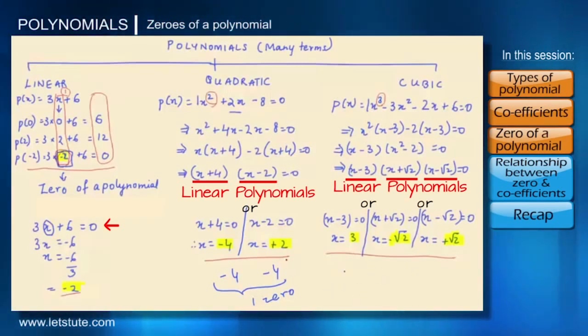Similarly, even for cubic, suppose if the zeros that we got were 3, 3 and root 2, just assuming, then these two would be considered only as one zero and this would be one zero. So then we can have only two zeros for a cubic polynomial.